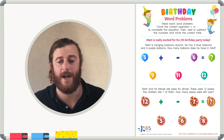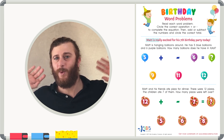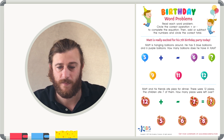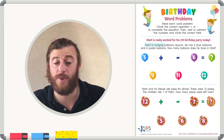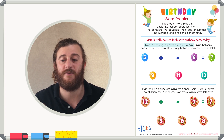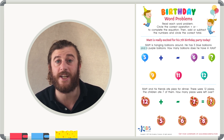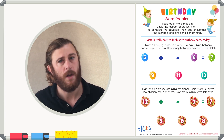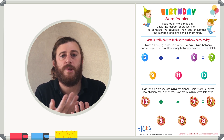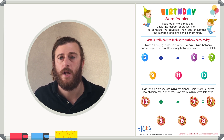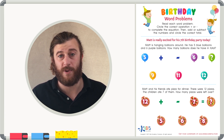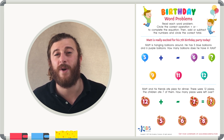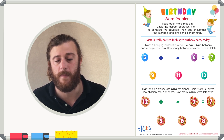Matt is really excited for his seventh birthday party. Matt is hanging balloons around. He has five blue balloons and six purple balloons. How many balloons does he have in total? Whenever I see a word problem, I like to read the whole thing first. Then I'm going to go back and reread the problem and underline the important information.